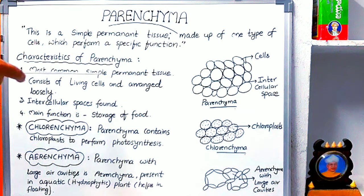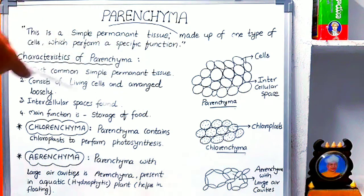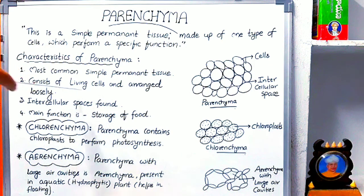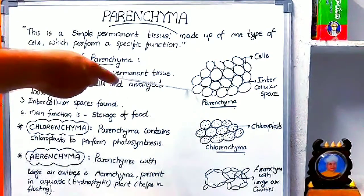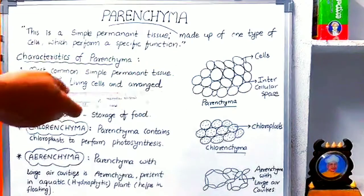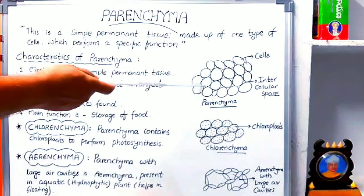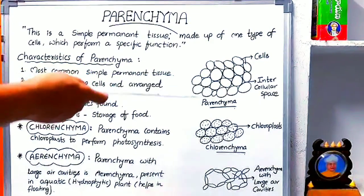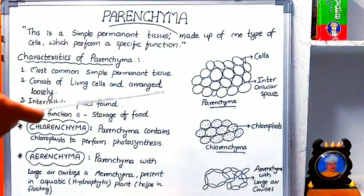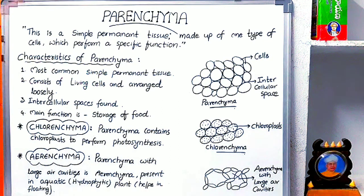Parenchyma is the most common simple permanent tissue, meaning it is present in mostly different parts of the plant body. It consists of living cells. The cells present in parenchyma are living cells and they are arranged loosely. As you can see in this diagram, these parenchyma cells are arranged loosely, which is why you can see spaces between cell to cell.